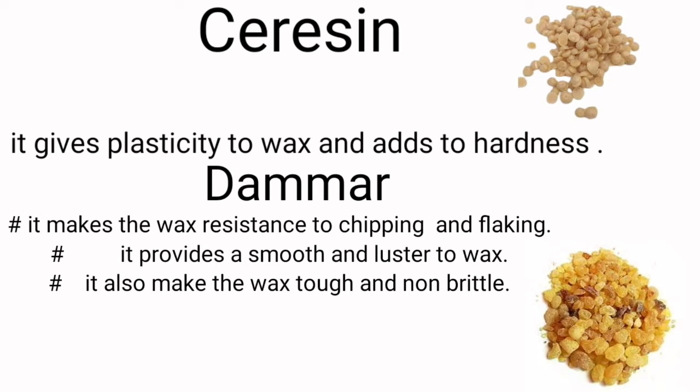Ceresin wax gives plasticity to the wax and adds to hardness. Gum dammar makes the wax resistant to chipping and flaking. It provides a smooth luster to the wax and also makes the wax tough and non-brittle.